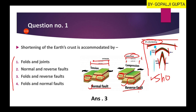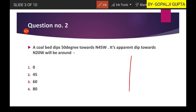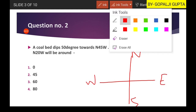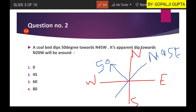Question two: a coal bed dips 50 degrees towards north 45 degrees east, and its apparent dip towards north 20 degrees west will be around... Let us make a direction chart: north, south, east, and west. According to the question the dip direction is north 45 degrees east and the amount of dip is 50 degrees, so the strike will be something like north 45 east.